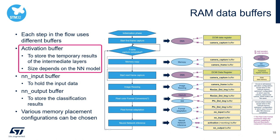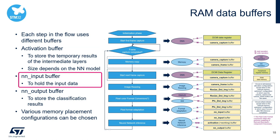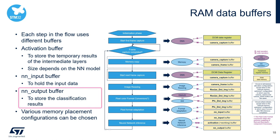Activation buffer is used during inference to store the temporary results of the intermediate layers within the neural network, and its size depends on the neural network model used. The NN input buffer is used to store the classification results. So, to meet the requirements, users can choose different memory placement configurations.